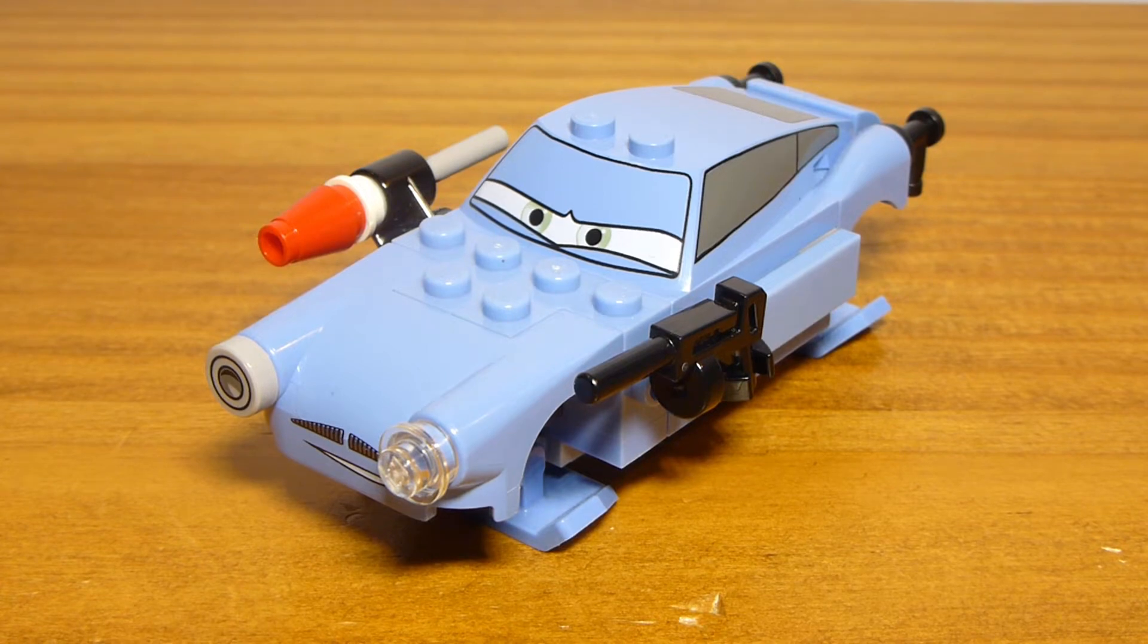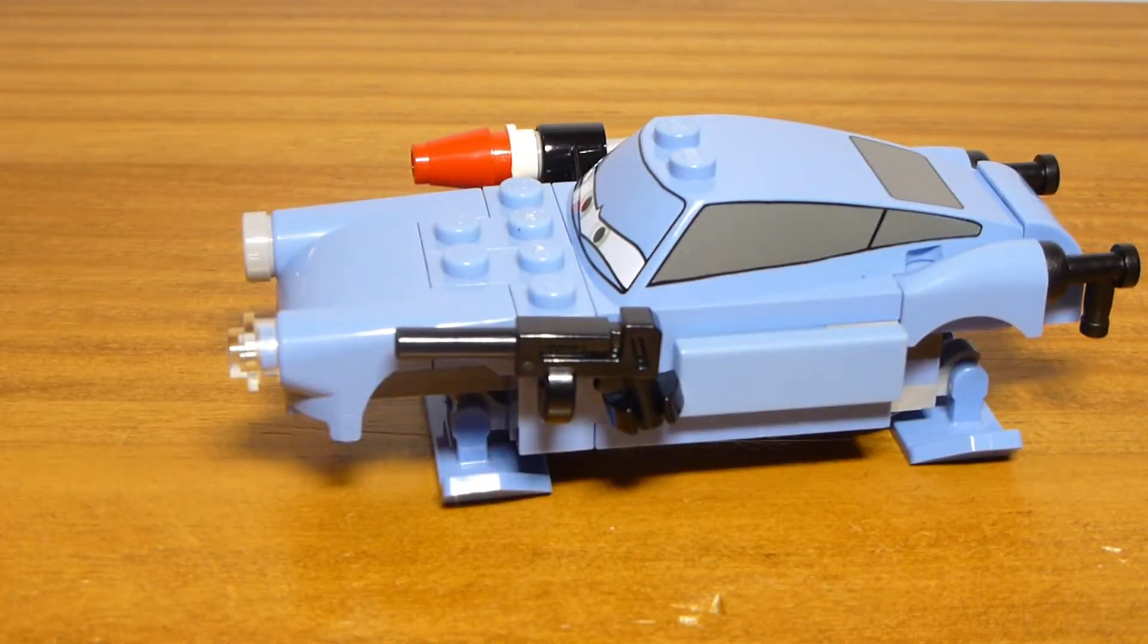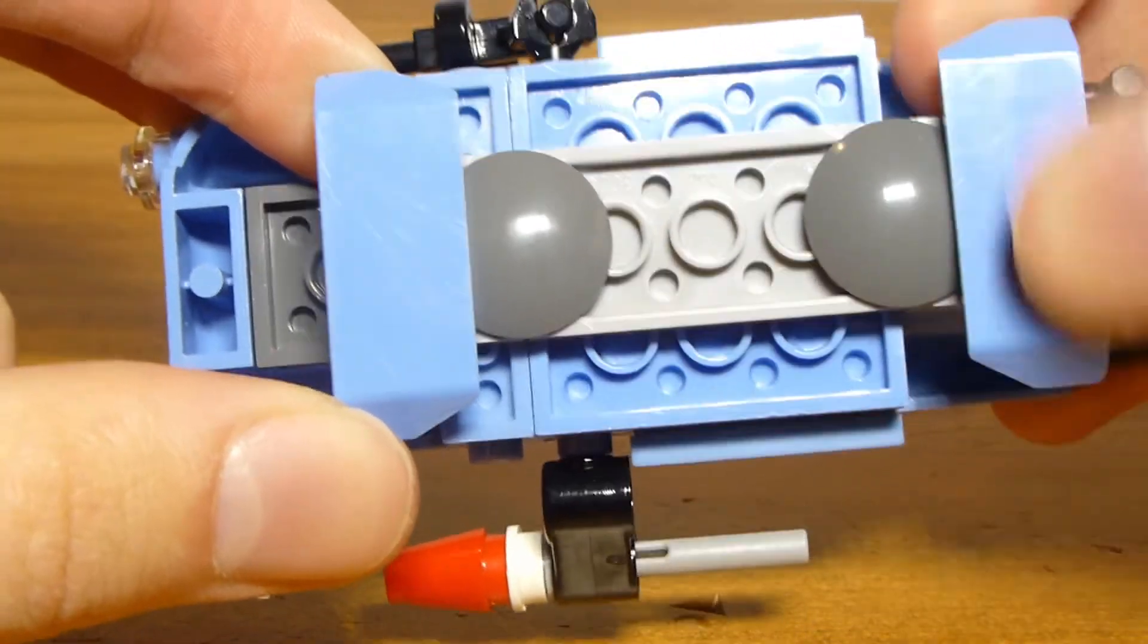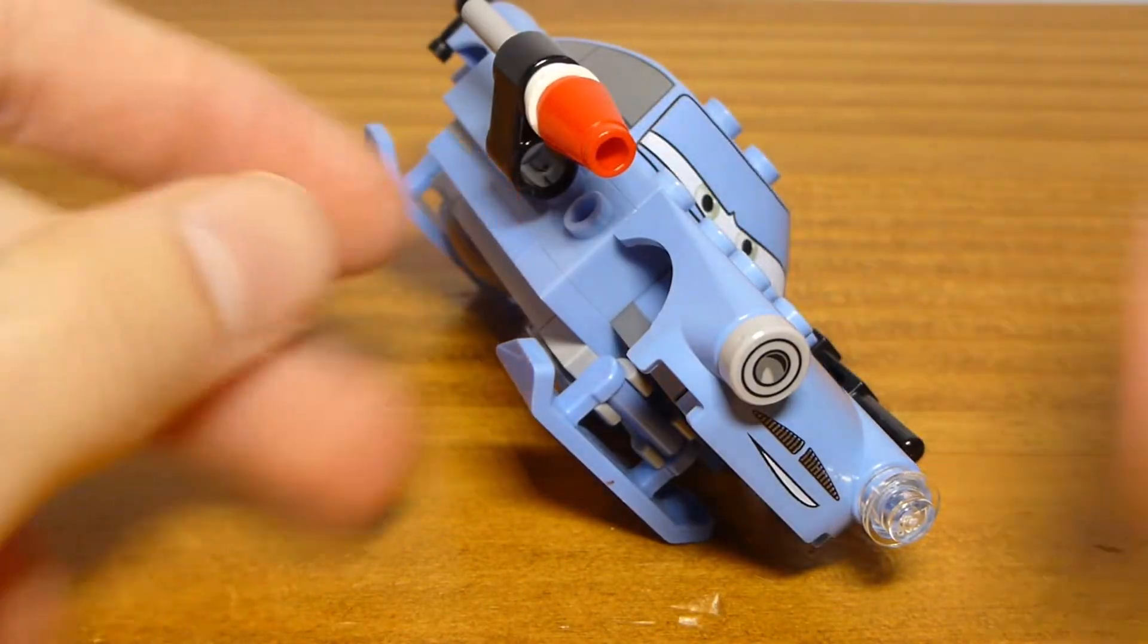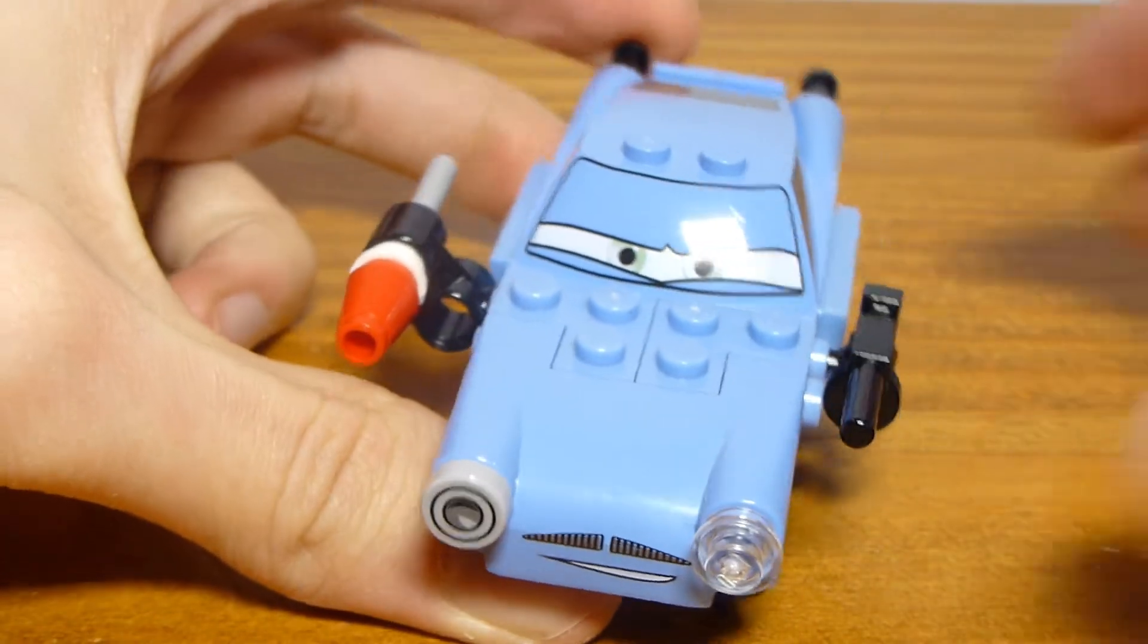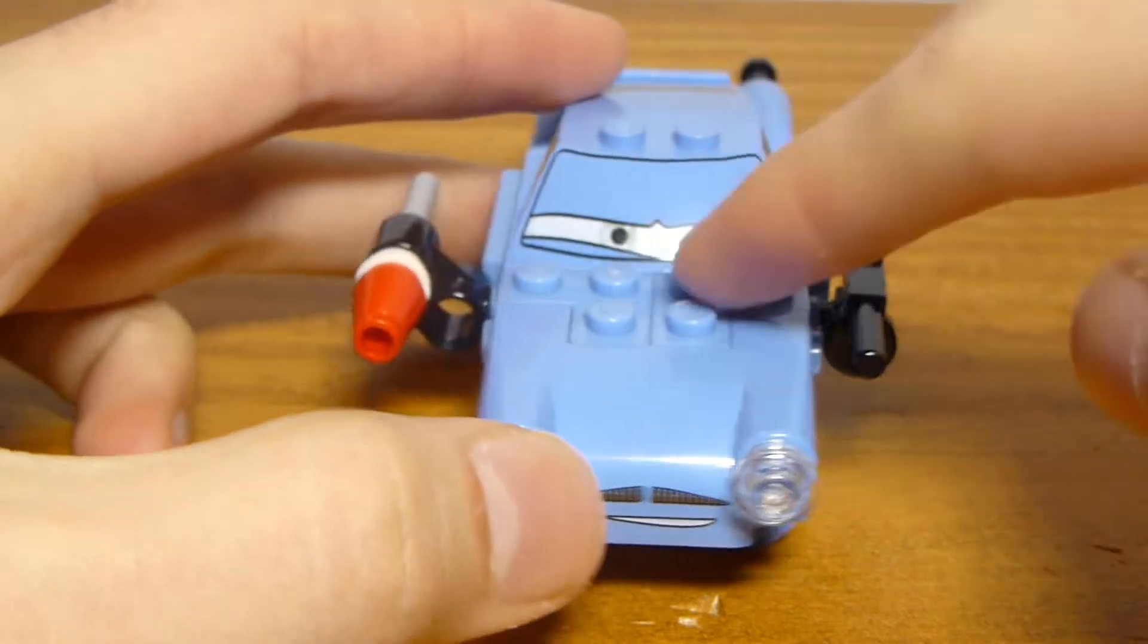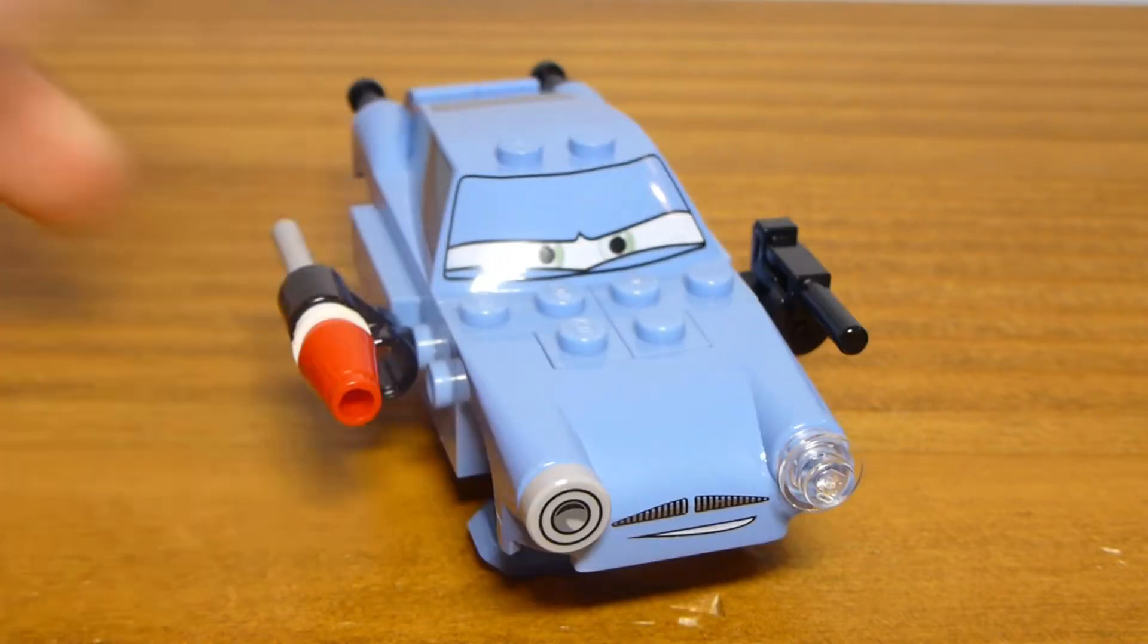First up for vehicles, we have Finn McMissile, who's an interesting build in this set because it's based off of his surfing sort of appearance when he's breaking into the oil rig from the very opening scene of the movie. Instead of giving him wheels, they give him these spoiler pieces as the skids, and they're exclusive in this color to the set.